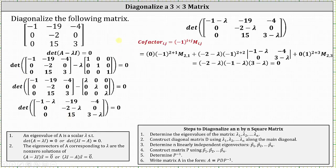To find the determinant, we will use the cofactor expansion method along row two, since row two has two zero entries. The first and third products will be zero, so the determinant equals the element in row two, column two — that is, negative two minus lambda — times negative one raised to the power two plus two, times the determinant of the remaining two by two matrix with entries: negative one minus lambda, negative four, zero, three minus lambda.